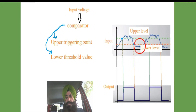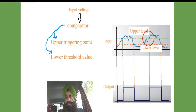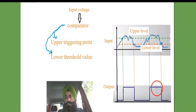Going to the upper triggering point again, it jumps from low to high value. It remains there for some time, and then when the input reaches some lower threshold value, it again jumps from high to the low value.